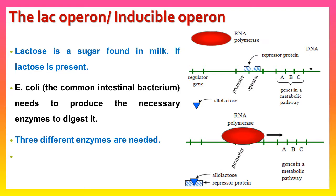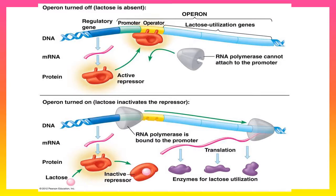When there is no lactose, the repressor protein is active and binds to the operator site, blocking RNA polymerase from binding. This prevents transcription and there is no gene expression. When lactose is present, lactose binds to the repressor protein, making it inactive and unable to bind to the operator site. RNA polymerase is then able to bind to the operator and transcription takes place.